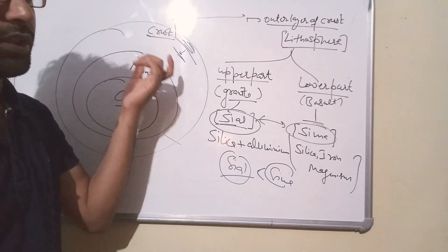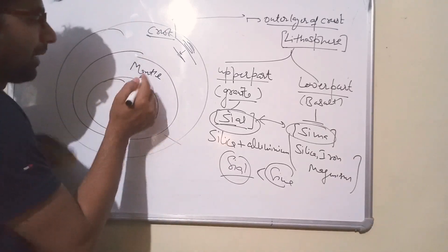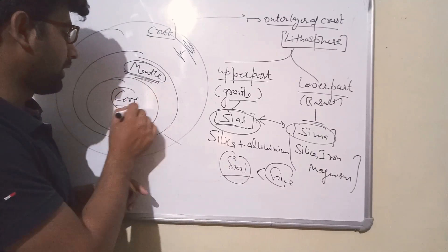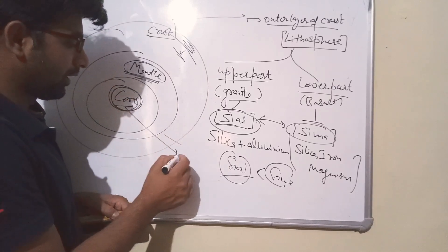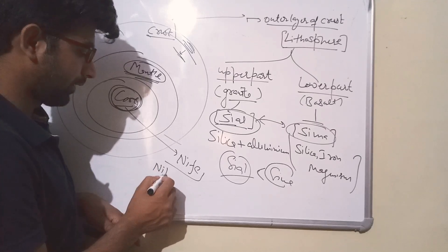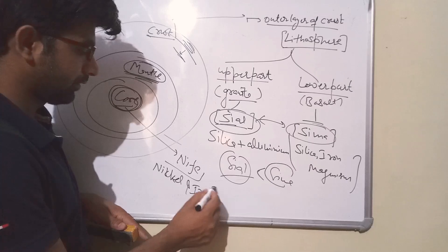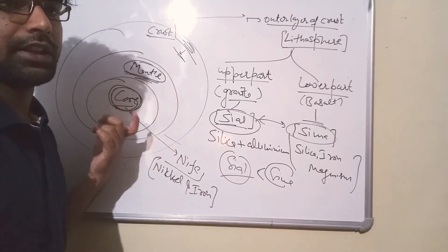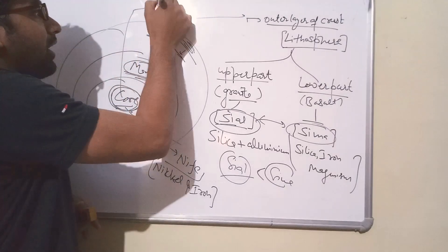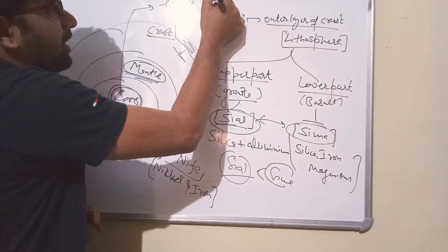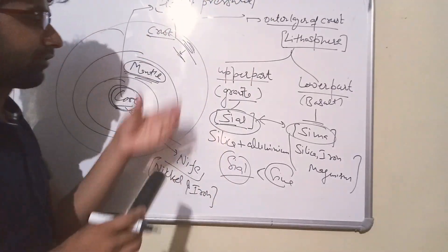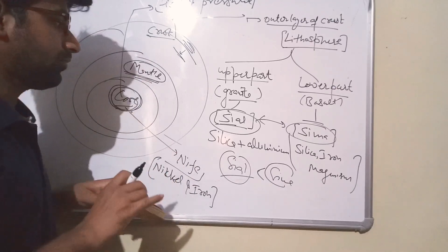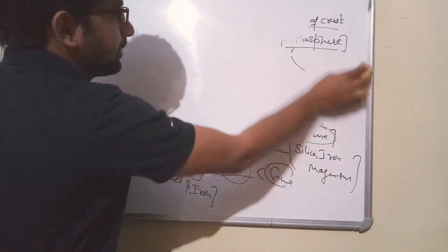Now let's look at the mantle, which is the lower part of the crust. The core is made of nickel and iron. The inner core is generally in a solid state, though geologists debate this. It is generally considered to be in a liquid state due to high pressure and temperature. These internal structures of the earth will help us understand the geographical features of the earth.